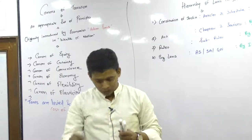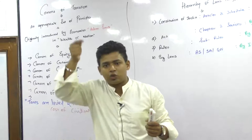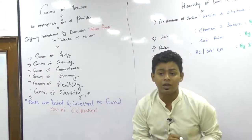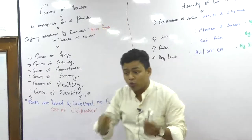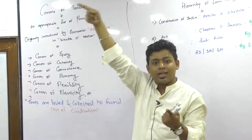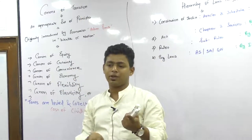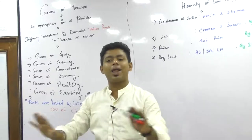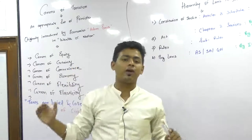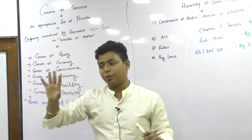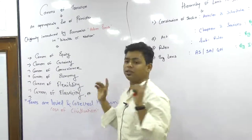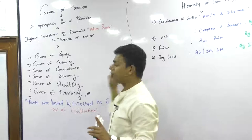Second is canon of certainty. If the government suddenly announces that from tomorrow income tax rate is 60%, is that fair? No. The assessor and taxpayer should be certain about how much tax they are going to pay in their assessment year. Whatever taxes they are going to charge in 2018-19, they had already announced it in Budget 2017, Finance Act 2017. So we are certain: up to 2.5 lakh - nil, 2.5 to 5 lakh - 5%, 5 to 10 lakh - 20%, above 10 lakh - 30%.